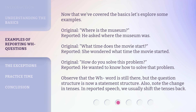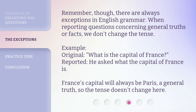Observe that the WH word is still there, but the question structure is now a statement structure. Also, note the change in tenses. In reported speech, we usually shift the tenses back. Remember, though, there are always exceptions in English grammar. When reporting questions concerning general truths or facts, we don't change the tense. Example — original: what is the capital of France? Reported: he asked what the capital of France is. France's capital will always be Paris, a general truth, so the tense doesn't change here.